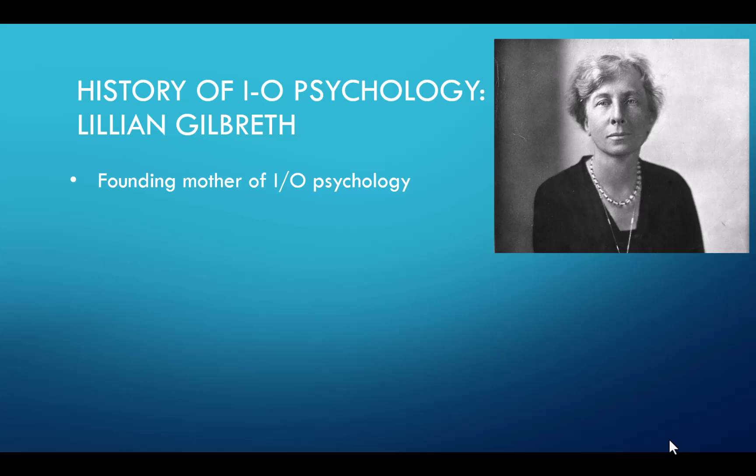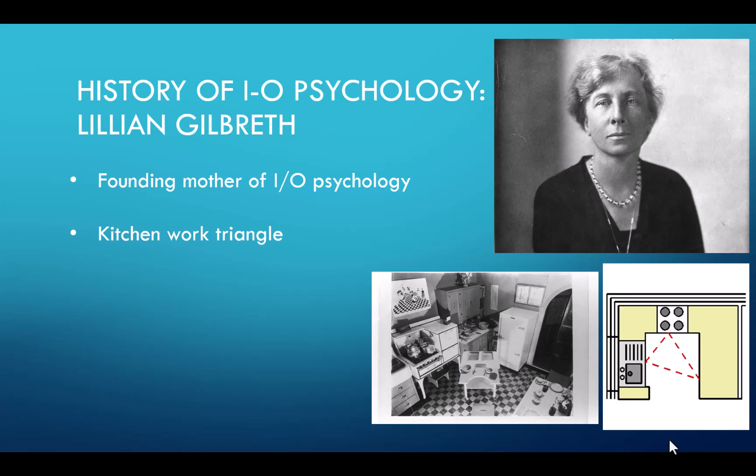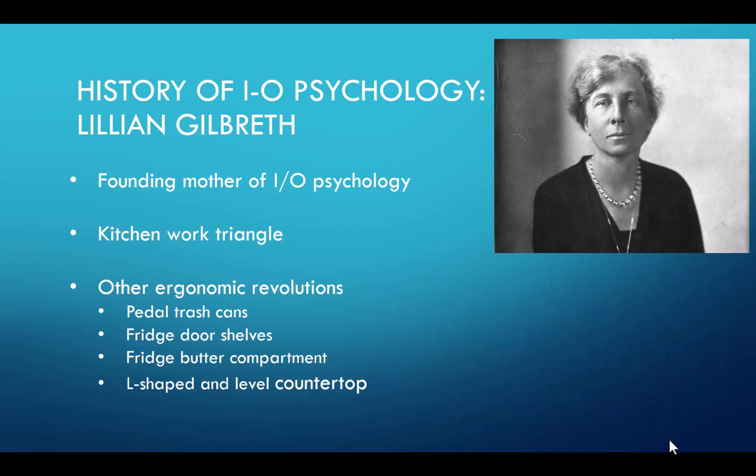One of her most enduring legacies is the kitchen work triangle. This design optimizes kitchen layouts by positioning the stove, the sink, and the refrigerator at three points of a triangle to minimize the distance and effort needed to move between these three essential areas when working. This concept significantly improved kitchen efficiency and became a standard in modern kitchen design. She also designed many other useful items still in use today: pedal trash cans, refrigerator door shelves, the butter compartment in our refrigerators, L-shaped countertops, and level countertops — all things that came from Lillian Gilbreth.